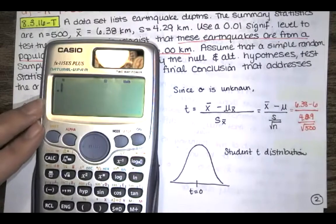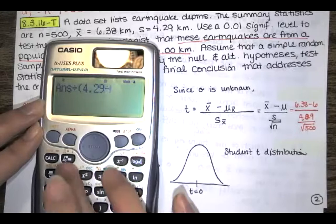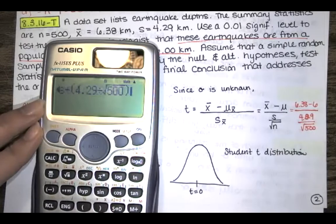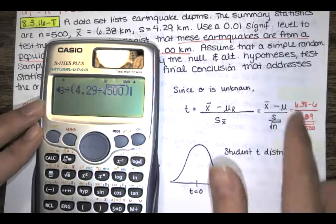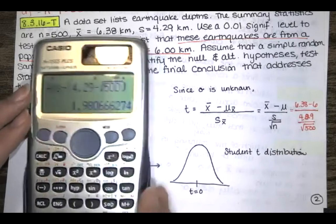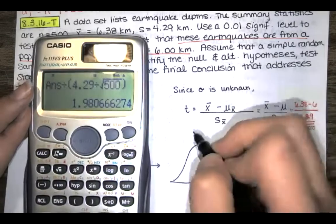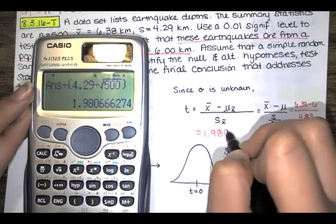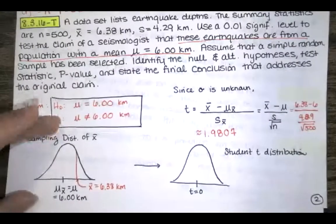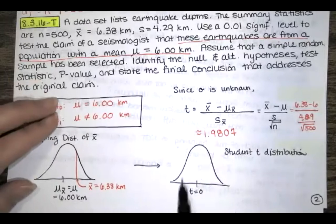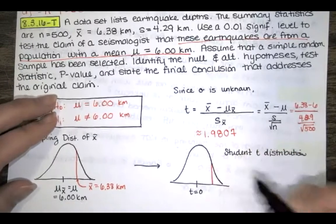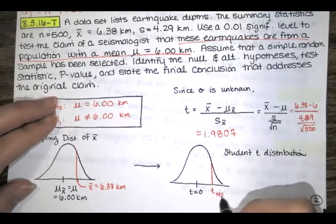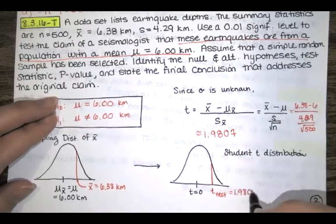Computing: 6.38 minus 6 divided by, open parentheses, 4.29 divided by the square root of 500, close parentheses. We get a T score of approximately 1.9807. That is our test statistic.